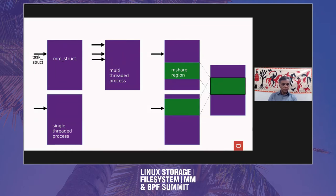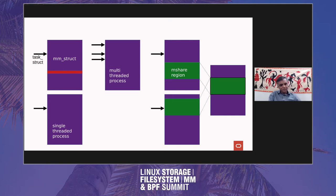So let's look at what happens. The first single-threaded process maps a page using M-Share — we get a little red box. Now, any modification that makes to it is going to be effective with anyone else, like in the second process, which also calls mmap M-Share. Now either of them can modify it, and they'll both see the other's modifications.